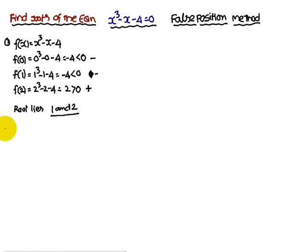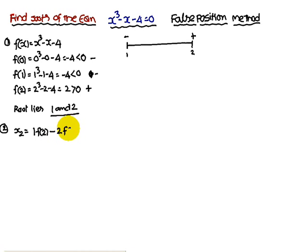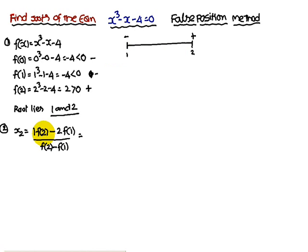On a real line, represent 1 with a negative sign and 2 with a positive sign. The formula for x₂ in the False Position Method is: x₂ = (x₁·f(x₂) - x₂·f(x₁)) / (f(x₂) - f(x₁)), that is, x₂ = (1·f(2) - 2·f(1)) / (f(2) - f(1)).